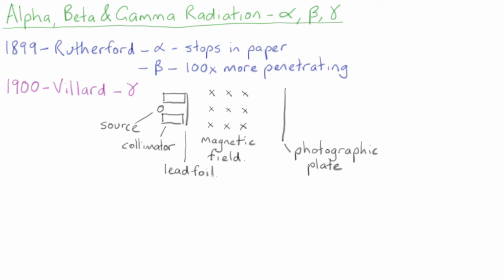He found that there were two different types of radiation coming out of the lead foil. One of them was bent in the magnetic field, and another one went straight ahead.